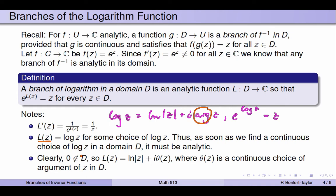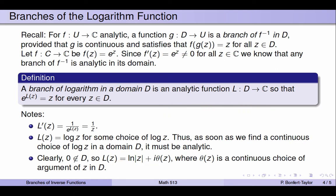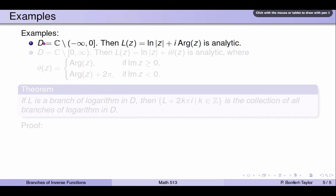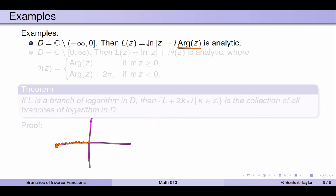Zero cannot be in D because e to the z is never equal to zero, so zero is not in the range of the exponential function. So uppercase L of z equals the natural log of the absolute value of z plus i times theta of z, where theta of z is a continuous choice of argument of z in region D. As soon as you can find this continuous choice, you're dealing with a branch of logarithm. For example, suppose D is the whole complex plane minus the negative real axis. In this region, the principal argument of z is a continuous function. Therefore, the natural log of the absolute value of z plus i times the principal argument is a continuous function satisfying e to the L of z equals z, and therefore it is a branch of logarithm and is analytic.